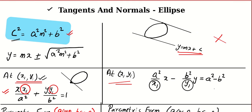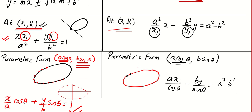Before starting problems related to tangents and normals, you should be very good with these formulae. One: the tangent in slope-intercept form y = mx + c gives two parallel tangents. Two: tangent at a known point (x1, y1) on the ellipse. Three: parametric form — extremely powerful because it gives you every point, every tangent, and every normal to the ellipse.